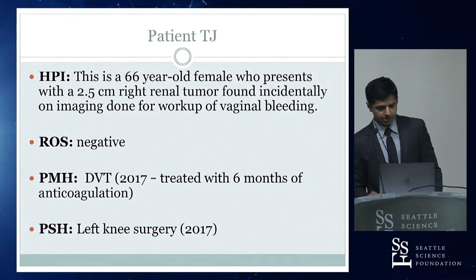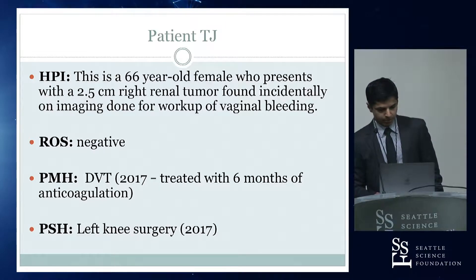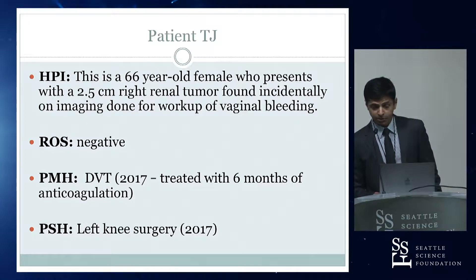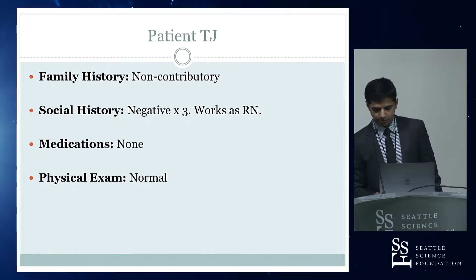Patient TJ is a 66-year-old lady who presented to us with a 2.5-centimeter right-sided renal tumor that was found incidentally on a workup done for vaginal bleeding. Review of systems was negative. She's pretty healthy, did have a DVT last year, was treated with six months of anticoagulation, which she's off now — and this occurred after a left knee surgery. Family history is non-contributory, social history is negative, she works as a nurse. No medications, and her exam is normal.